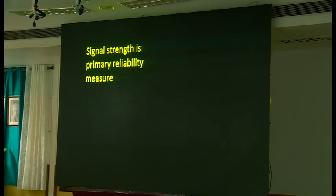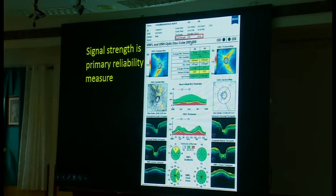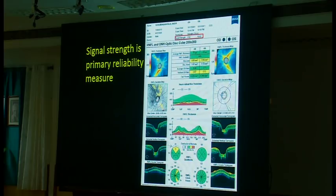The best reliability measure is signal strength, and it's right at the top of the scan so you can't miss it. I'm showing examples from our Zeiss machine but other instruments have similar features. You can see a signal strength box indicating 7 out of 10 in the right eye and 10 out of 10 in the left eye. Every machine is a little different, but generally scores of 7 out of 10 or 70 out of 100 are pretty good. Once you start getting down to 50, that's probably the limit at which you can really trust things.